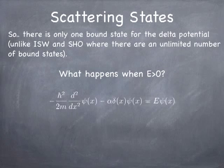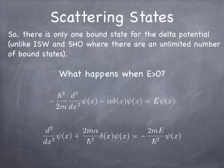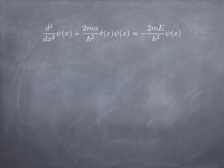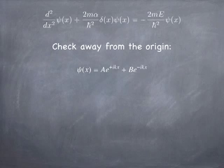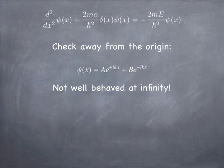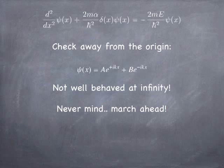If you write out the Schrodinger equation and move things around a little bit, you can see that when focusing on positions not at the origin, if the energy is positive, you end up with simple traveling waves — some component of e to the plus ikx and e to the minus ikx. That particular wave function is not very well behaved at infinity, but we'll march ahead and hope to make it make sense a little bit later.